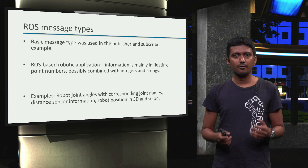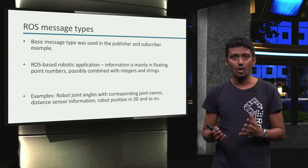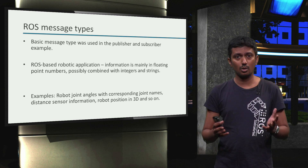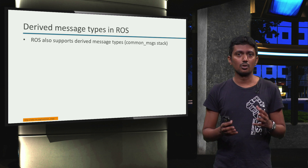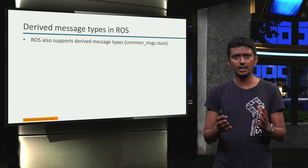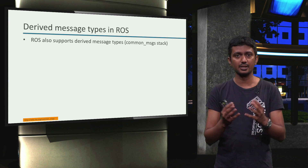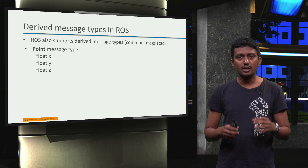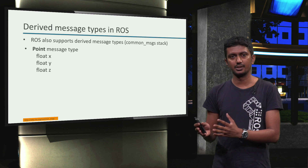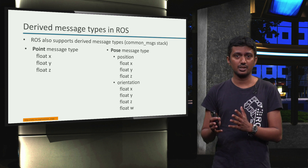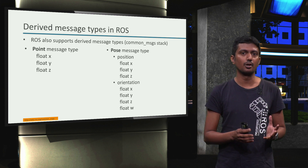For example, we may have to exchange information about robot joint angles and corresponding joint names, data from a distance sensor, or a position in 3D that a robot has to reach. Fortunately, ROS also provides and supports several derived message types. These derived message types are composed of a combination of basic message types. For example, the Point message type can be used to exchange information about a point in 3D space, or a Pose message type can be used to exchange information about the position and orientation of a 3D rigid body in space.